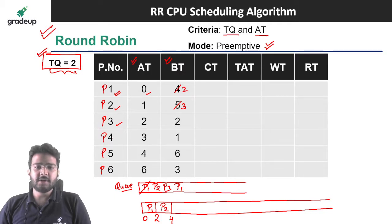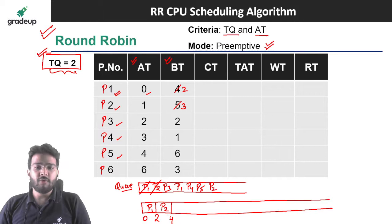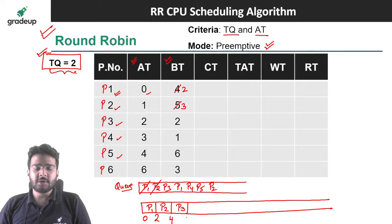At 4 units of time, P4 and P5 have also arrived, so we enqueue them. We dequeue P2 and re-enqueue it. Now we schedule P3. The time quantum equals the burst time of P3, so we schedule it for 2 units — from 4 to 6. P3 completes its execution and is dequeued.